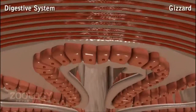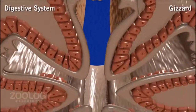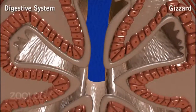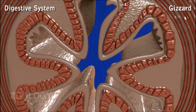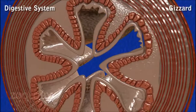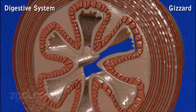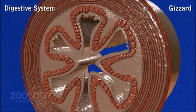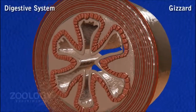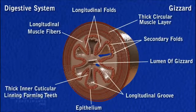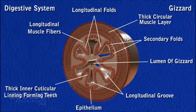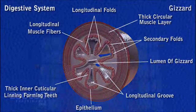Gizzard: The crop leads behind into a small, cone-shaped, muscular and thick-walled chamber called gizzard. It consists of two parts: an anterior armarium and a posterior stomodial valve.